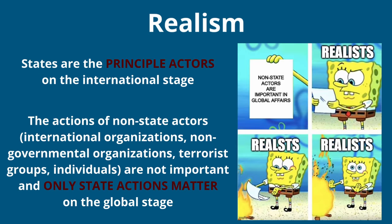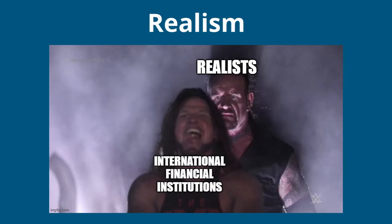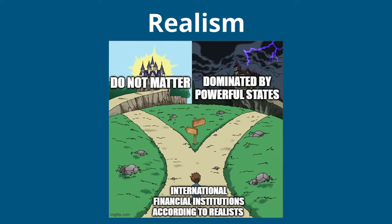Realism also argues that states are the principal actors on the international stage, meaning that countries are the only entities whose actions matter in global affairs. This gives realists a rather cynical take on international financial institutions — at best, they simply do not matter to realists, and at worst, they are controlled by large, powerful states that dominate them, as opposed to building multilateral solutions to grow global economic cooperation.